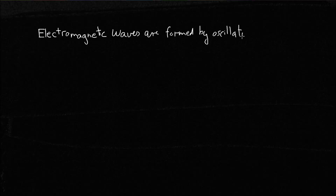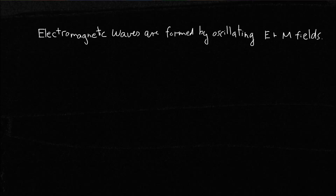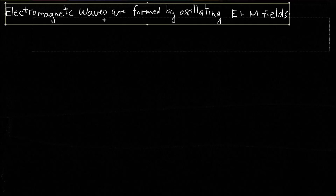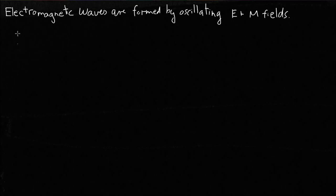Today we're going to be looking at properties of electromagnetic waves. The first is that electromagnetic waves are formed from oscillating electric and magnetic fields. You know from previous work what electric fields and magnetic fields are — electric fields are the ones from electrostatics, static electricity, and magnetic fields are from magnets.